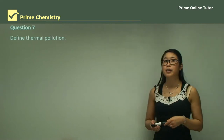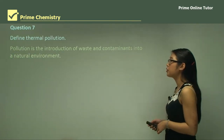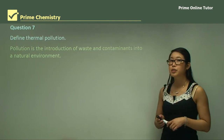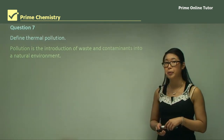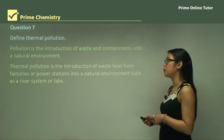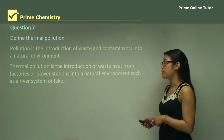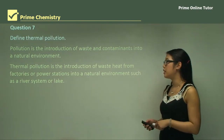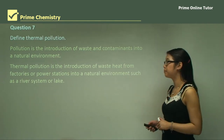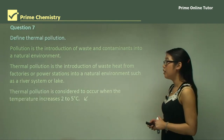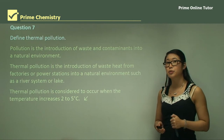Question 7: Define thermal pollution. Pollution is the introduction of waste and contaminants into a natural environment. Thermal pollution is the introduction of waste heat from factories or power stations into a natural environment such as a river or lake. Thermal pollution is considered to occur when the temperature rises by 2 to 5 degrees Celsius.